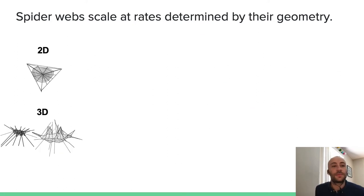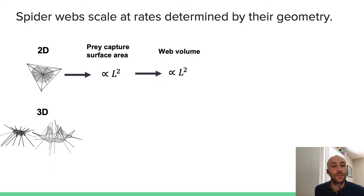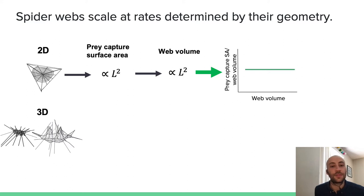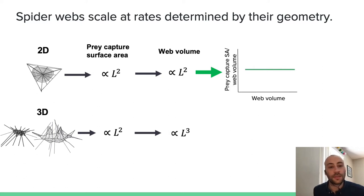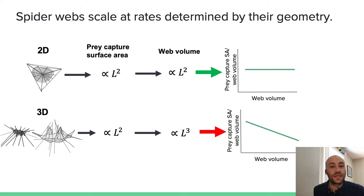Something we do know about spider webs is that they scale at rates determined by their geometry. For two-dimensional webs, prey capture surface area should be proportional to a linear dimension squared. In addition, web volume should also be proportional to a linear dimension squared. Thus, we should expect that prey capture surface area per unit of web volume should be constant as a function of web volume. For three-dimensional webs, prey capture surface area should also be proportional to a linear dimension squared, while web volume should be proportional to a linear dimension cubed. This means that prey capture surface area per unit of web volume should decline to approximately the negative one-third power as a function of web volume.